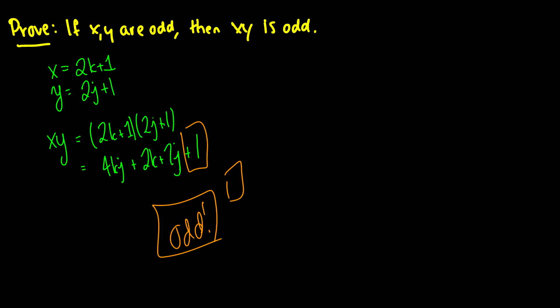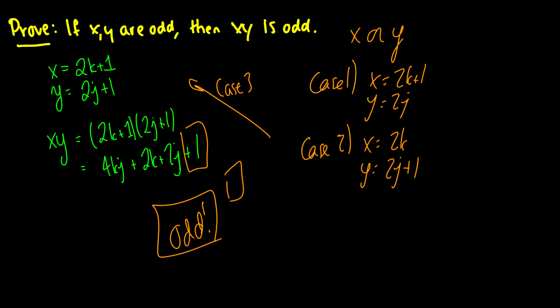If we were to say x or y, we'd have to do a case 1 where x is equal to 2k plus 1, y is equal to 2j. We'd have to have a case 2 where x is equal to 2k and y is equal to 2j plus 1. And then this would be our case 3 up here. And all of these would have to be correct.